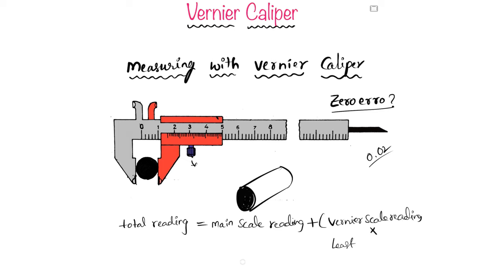For this vernier caliper, the least count is 0.02 mm. If you are wondering how to calculate the least count of any measuring instrument, there is a link in the description you can check. Now, back to the subject — we have the least count, and we need to take the main scale reading and the vernier scale reading.